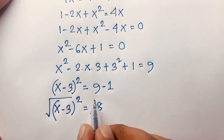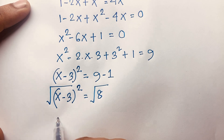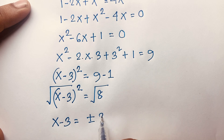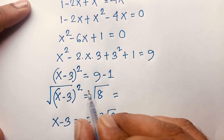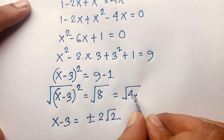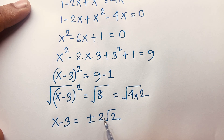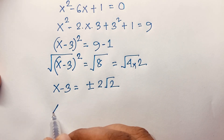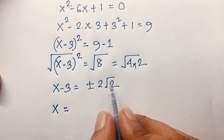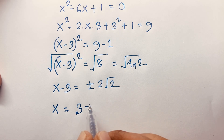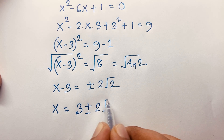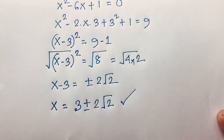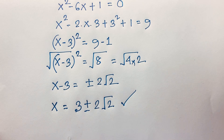If I use both sides square root, we find x minus 3 equals plus or minus square root 8, which equals 2 square root 2. Because square root 8 equals square root of 4 times 2, and square root 4 is 2. Moving 3 to this side, our answer is x is equal to 3 plus or minus 2 square root 2.